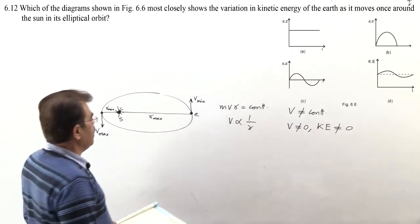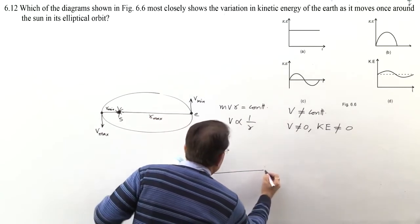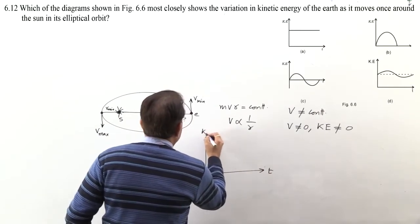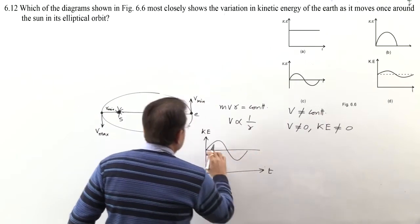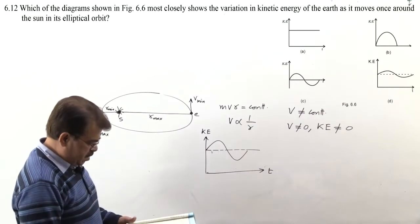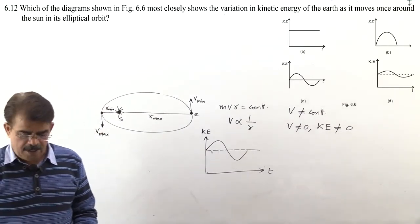Its meaning: kinetic energy is not constant, so a is incorrect. Kinetic energy is never zero, so b and c are also incorrect. D is the correct option, in which kinetic energy is shown varying. So 6.12 answer is b correct.